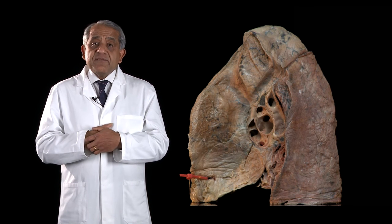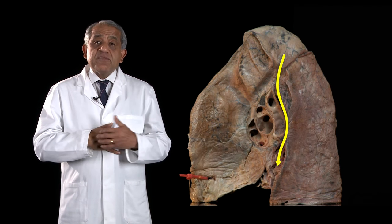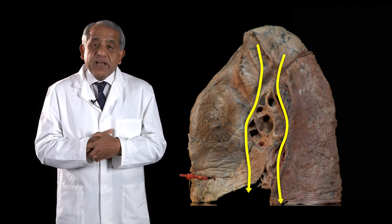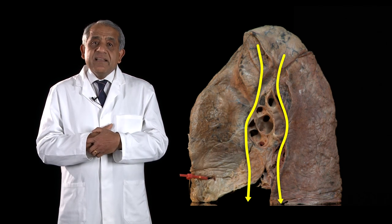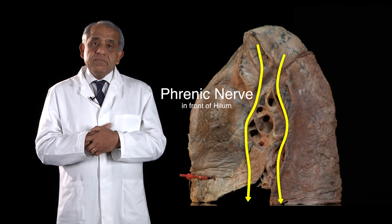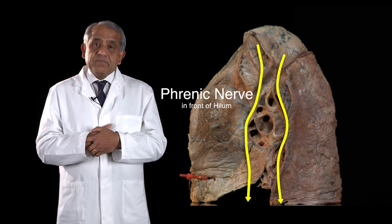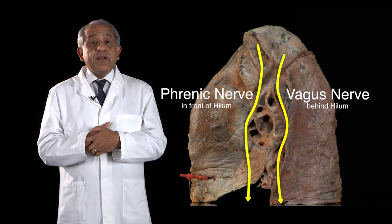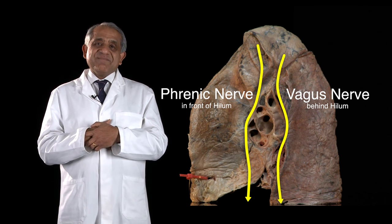As on the left side, you have the right phrenic and vagus nerves related to the hilum of the right lung. The nerve that runs in front of the hilum is the phrenic nerve, and the one that runs behind the hilum on its way to the esophagus is the vagus.